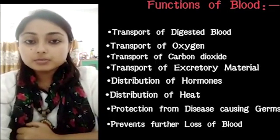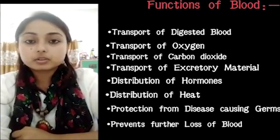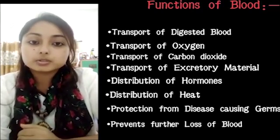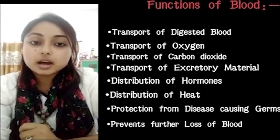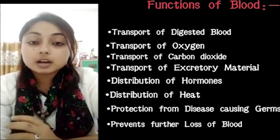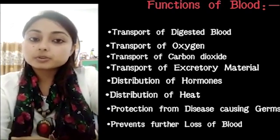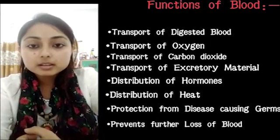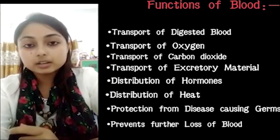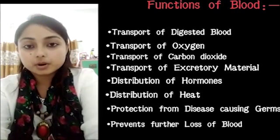Now we will learn about the functions of blood. First, it transports digested food from the alimentary canal to the body tissues. The end products of digested food are absorbed by the intestine and then put into blood circulation — this is how we get energy from the food we eat. It also helps in the transport of excretory materials, taking them from the body tissues to the liver, kidney, or the skin, from where these waste substances are removed from our body.